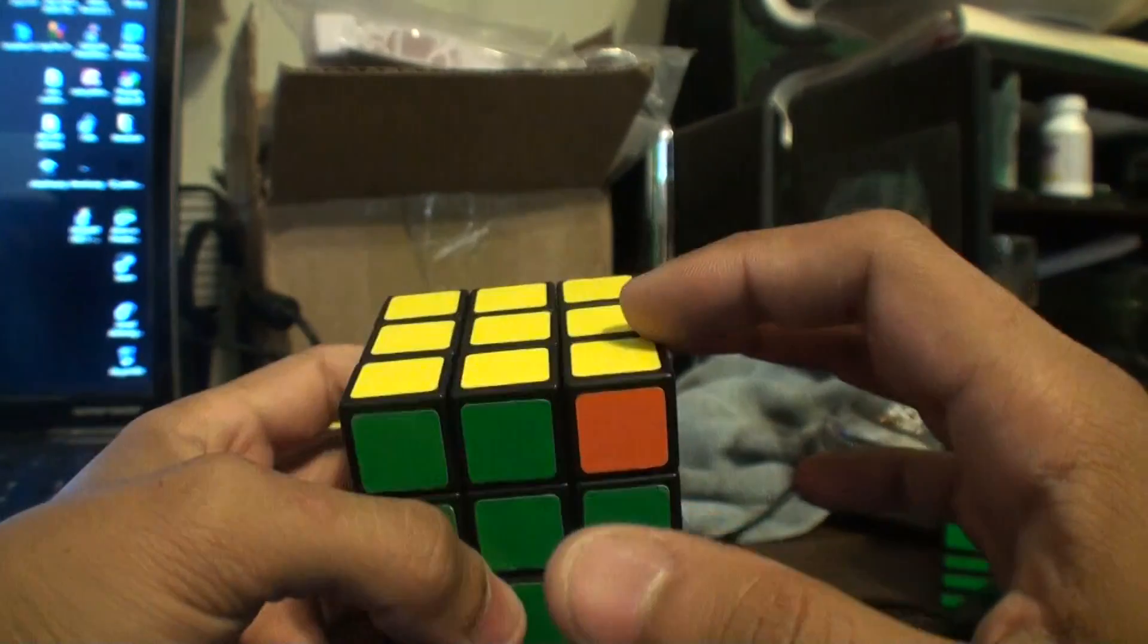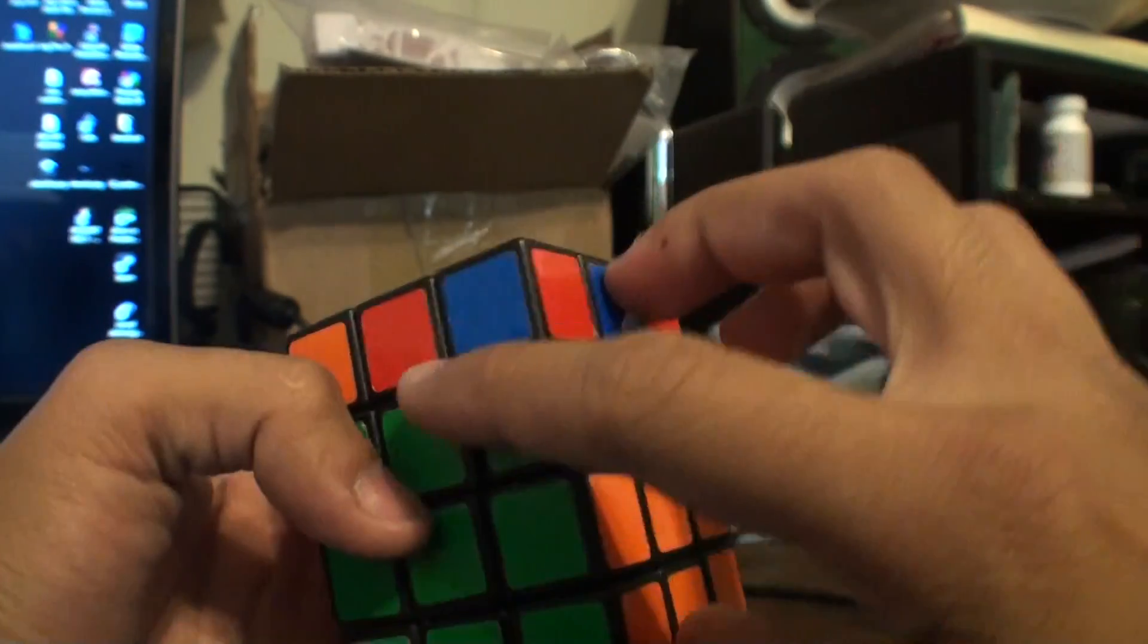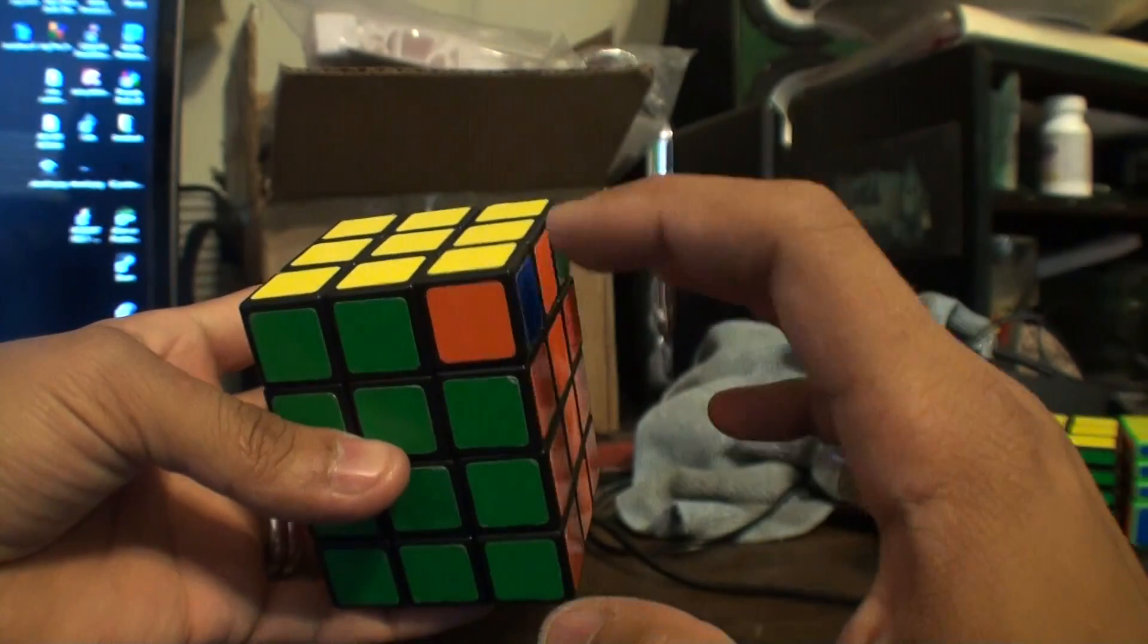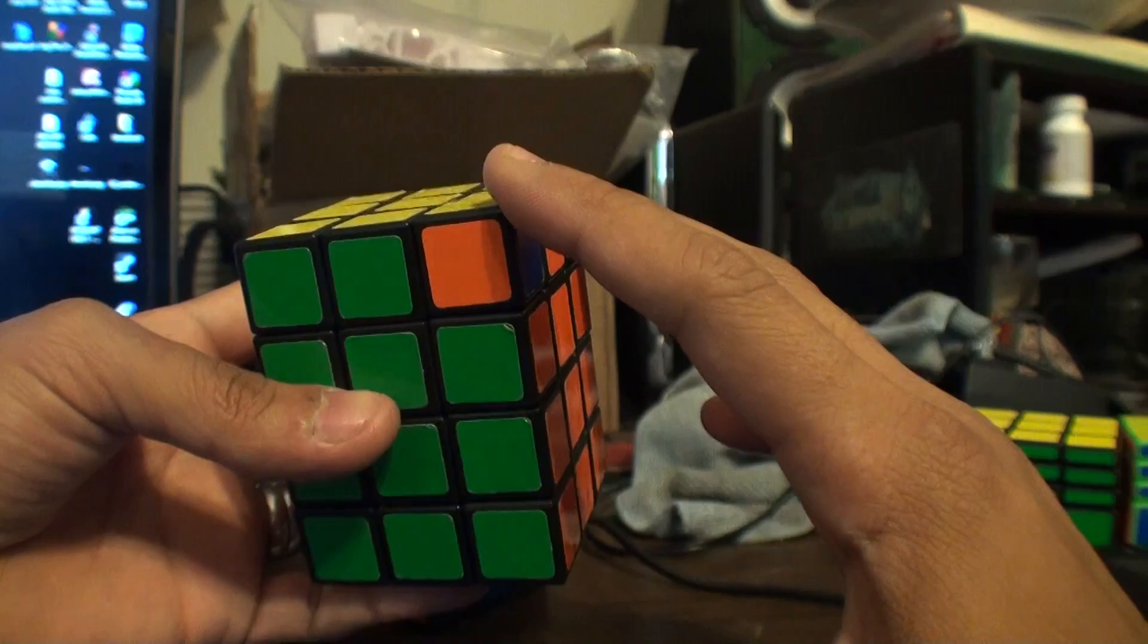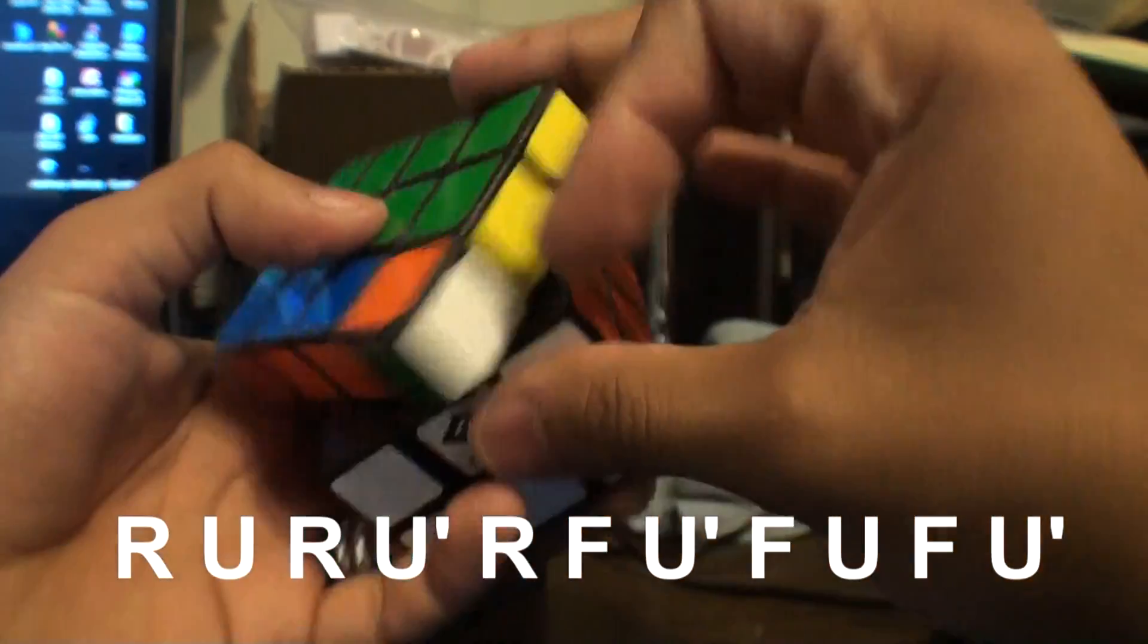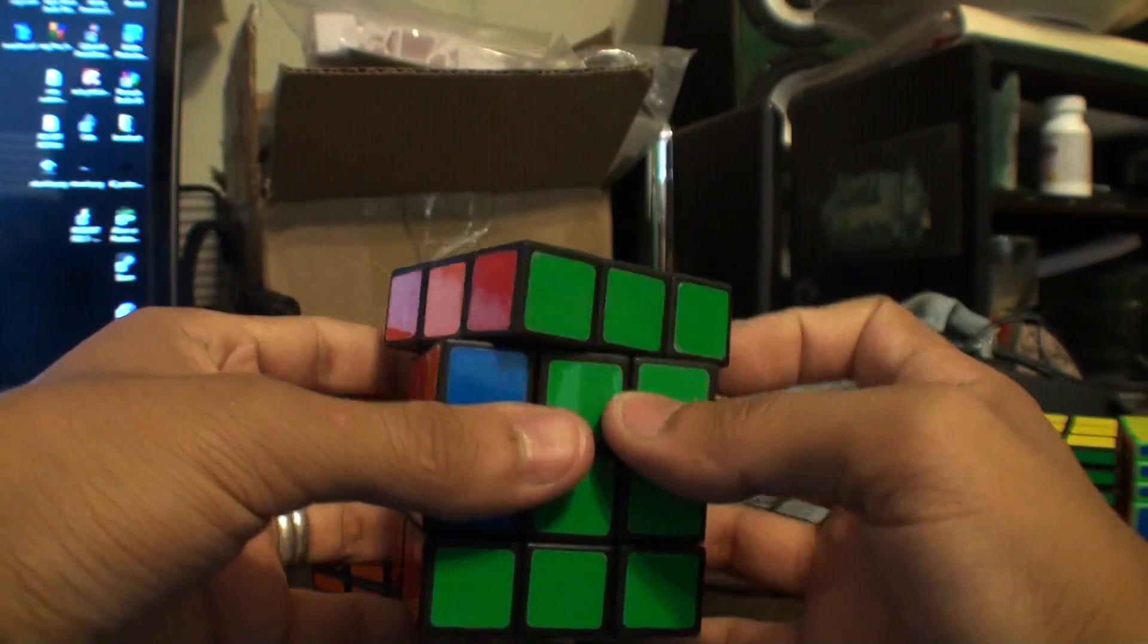So when you swap these two, it should mess up this layer, these two inner layers again. But you should be able to correct it with these two right here. So we're going to do the algorithm we learned on my domino solve video. We're going to solve these two first. We're going to switch these so it's R U R U' R F U F U F U'. And that should have swapped them.